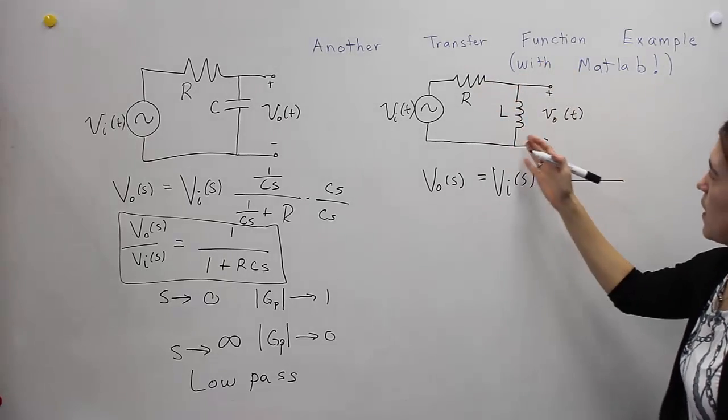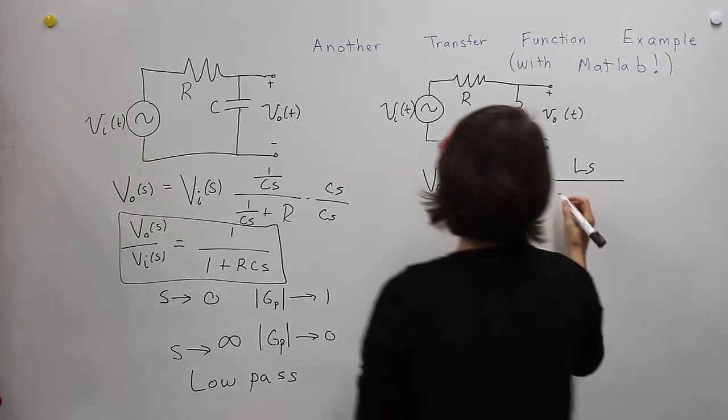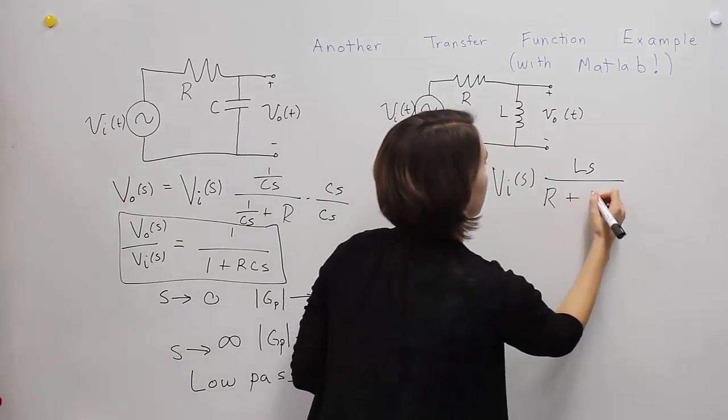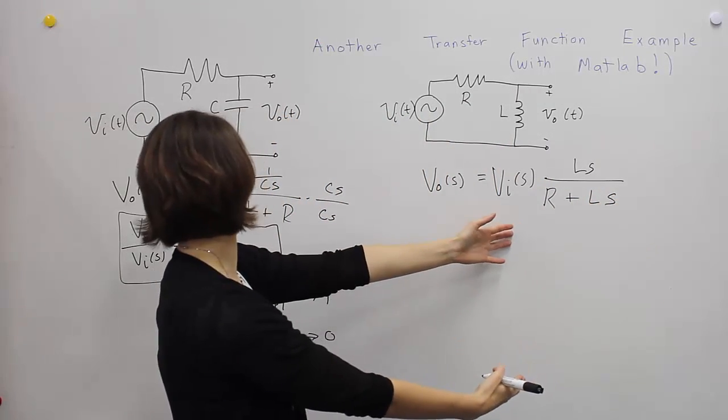So same thing again here, this impedance, which is Ls for an inductor. And then these two impedances added together, Ls. Put this in, it's already in a very nice form.